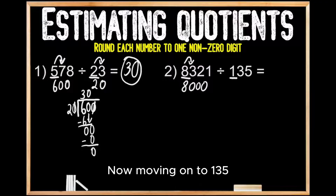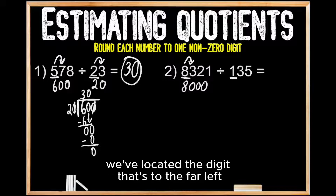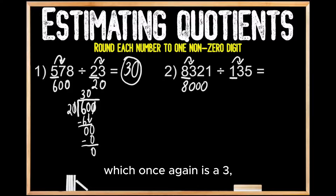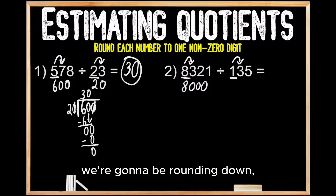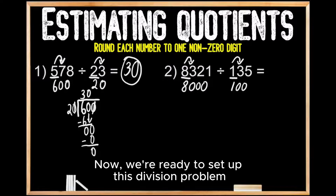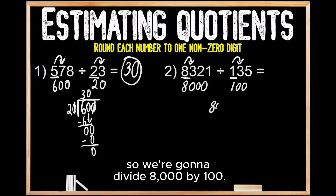Now moving on to 135, we've located the digit that's to the far left, and now we're going to look to the digit next door, which once again is a 3. So once again we're going to be rounding down. So 135 is going to round down to 100. Now we're ready to set up this division problem, so we're going to divide 8,000 by 100.